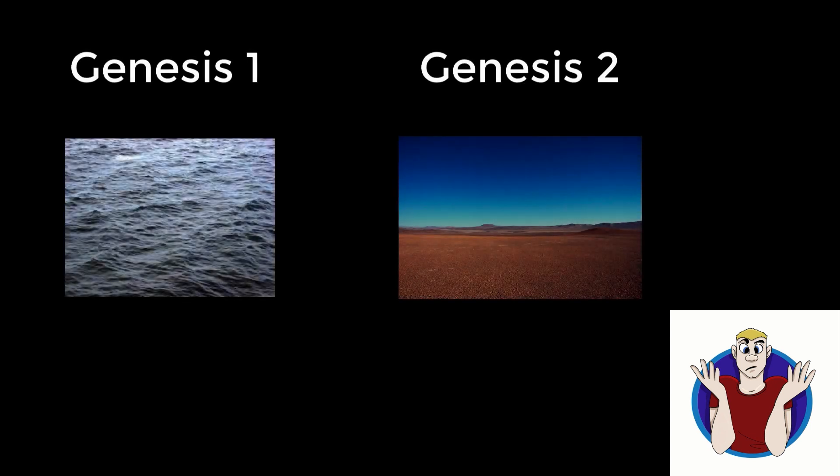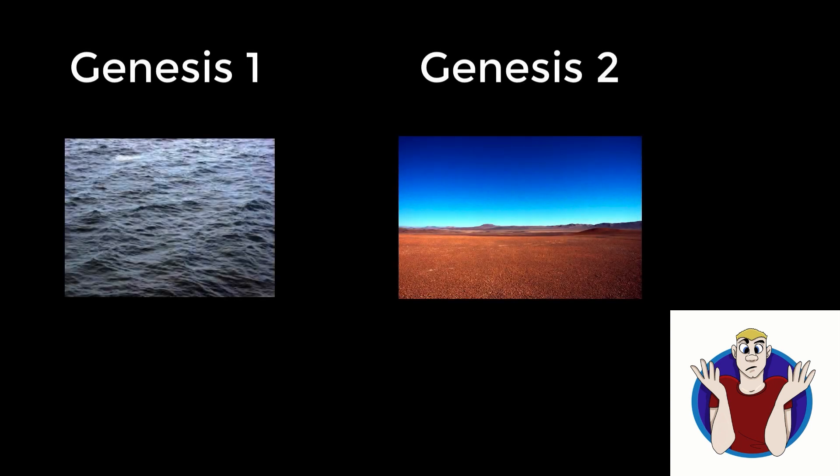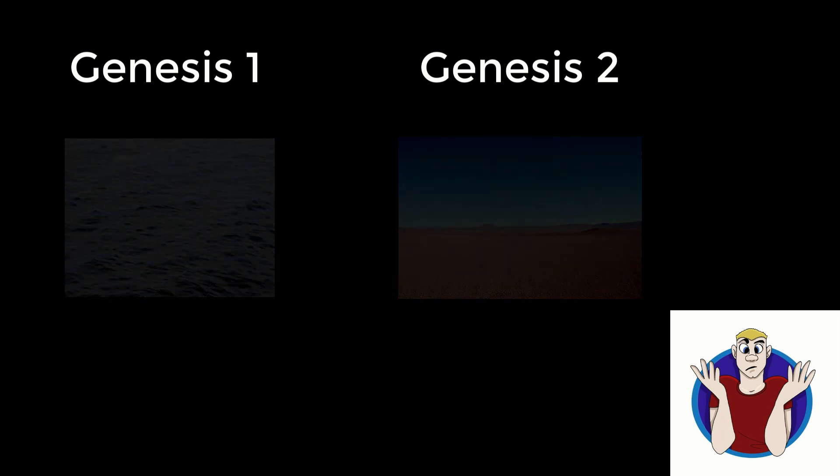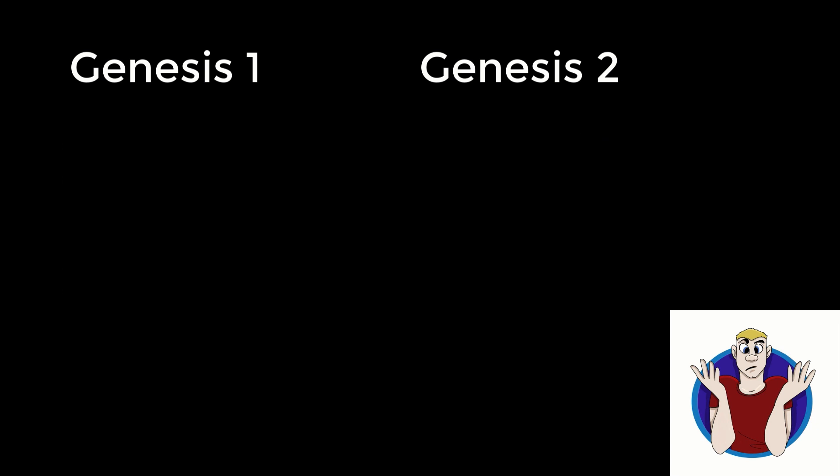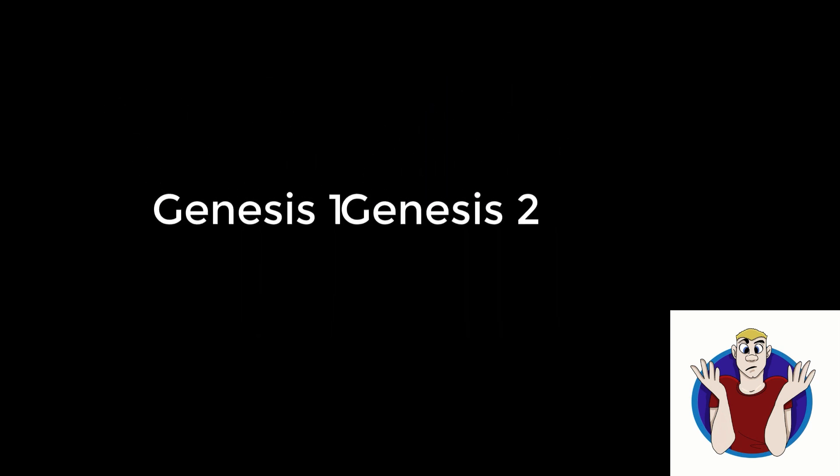However, it has become clear that this was not the case and that many people and many traditions were brought together to make the first books of the Bible. This is why when we read, for example, the first two chapters of the Bible, we see two different stories of how the world was created, and they're quite different. This is because there were two stories that were edited together into one narrative.